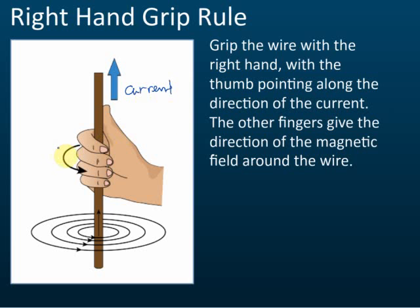The other four fingers show the direction of the field. So: the thumb shows the direction of the current, and the other fingers show the direction of the field. In this example, the fingers show an anti-clockwise direction, so the field is anti-clockwise when the current goes upward. That is how we use the right-hand grip rule to determine the direction of the field.